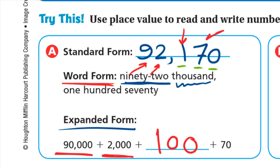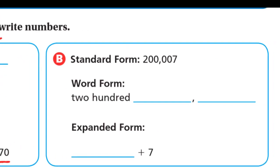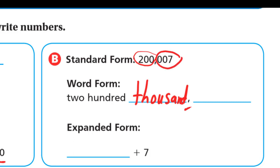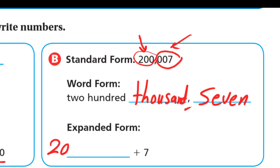Part B: we have the number in standard form and need to complete the word form and expanded form. We read the thousands period first, which is 200,000, and complete the word form. Then a comma, and we read the rest — the ones period has only 7, with zeros at tens and hundreds, so after the comma we write seven. In expanded form: 2 at hundred thousands is two hundred thousand, plus 7 at ones is seven.